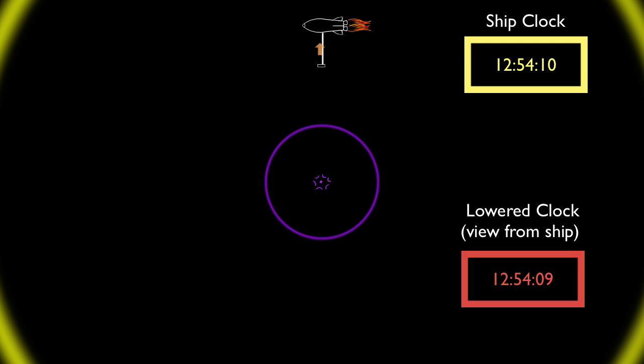Interestingly, the light coming from the lowered clock also shifts from yellow to red, while your ship's identical clock remains yellow. Why? Because light from the lower clock is losing energy as it's trying to climb up toward your ship out of the strong gravitational field. Although it leaves the clock as higher energy yellow, it arrives to your ship as lower energy red.